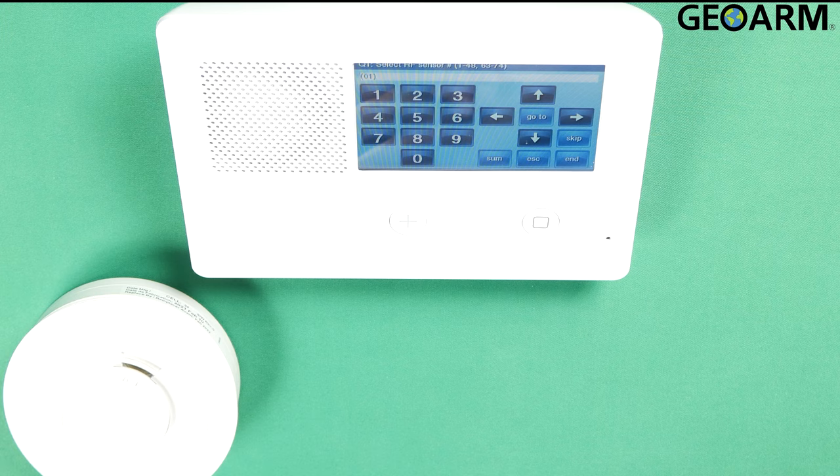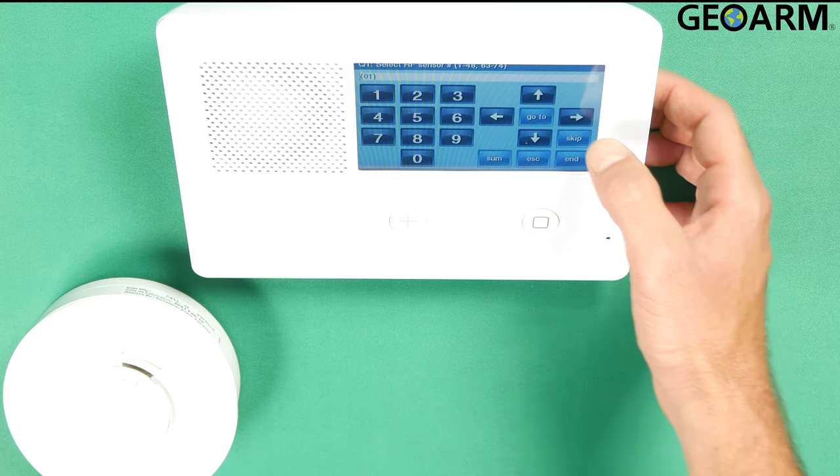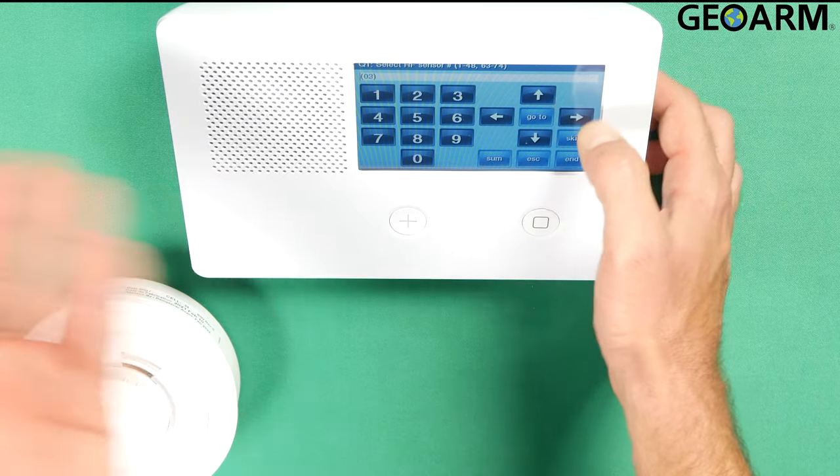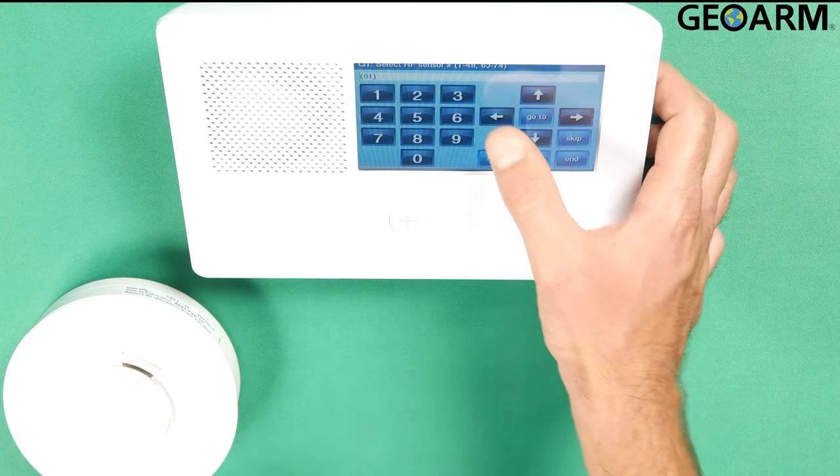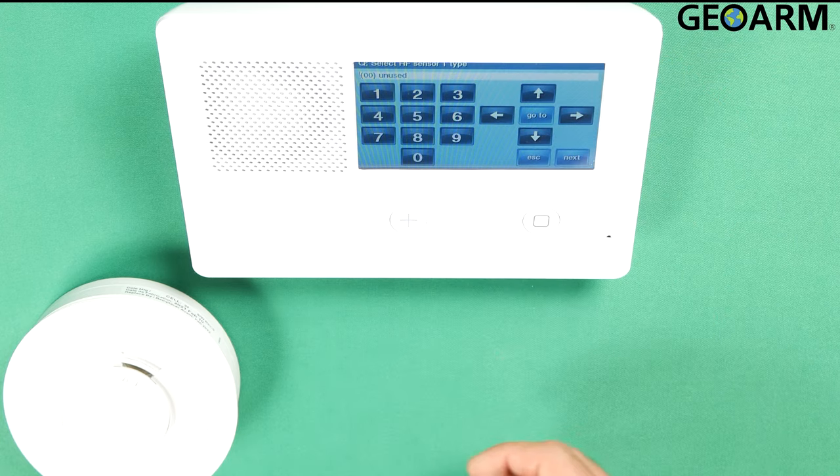Now it'll say Q1. It's wanting you to select which zone you want to program into. I don't have anything programmed in here. This is a fresh panel. So if you wanted to go to a different zone, you just press the right or left arrows and you can cycle through whichever zones you'd like. I'm going to leave it on zone 1 here. Press the down arrow.